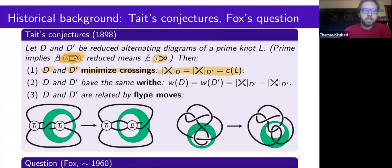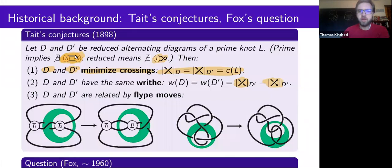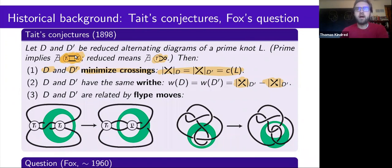The second conjecture is that all reduced alternating diagrams of a given prime knot have the same writhe, where the writhe is the number of positive crossings minus the number of negative crossings. This depends on an arbitrary choice of orientation on the knot, although either choice of orientation gives the same writhe. Throughout, I'm going to be talking about knots; everything I say will apply to links but with qualifications.